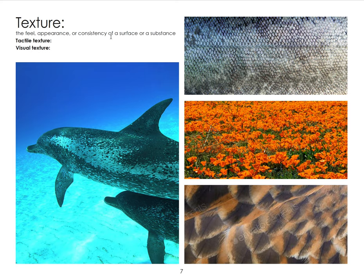Texture is the feel, appearance, or consistency of a surface or substance. Tactile texture is something you can actually touch and feel. Visual texture is what you see — like spotted dolphins with beautiful camouflage patterning, the scales of a fish that catch the light, a field of poppies creating visual texture across a landscape, or the feathers of a red-tailed hawk. Tactile is what you can touch; visual is what you can see.